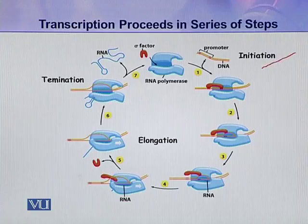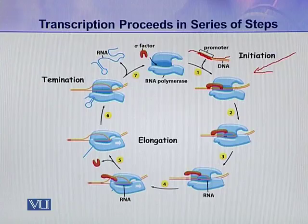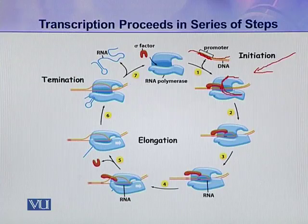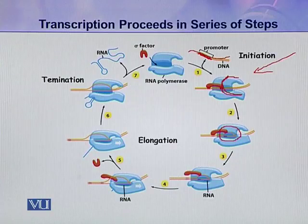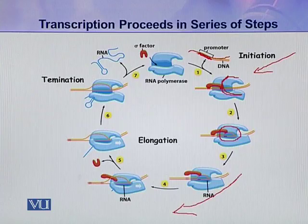It starts from initiation — here is the DNA strand, and this small portion is the promoter. The RNA polymerase attaches to the promoter and starts initial transcription. You can see a small transcription bubble, and then synthesis starts.